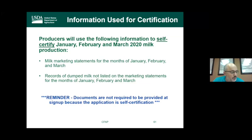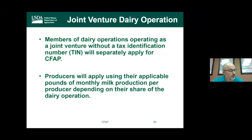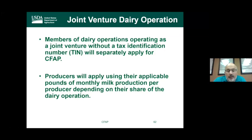For husband-and-wife joint ventures without an employer tax identification number, each member applies separately for CFAP. You would break down your percentage of milk production — for example, if you share 50/50, each partner records 50% of total production on their own application. Documents used for certification should be retained for up to three years in case the application is subject to spot check.